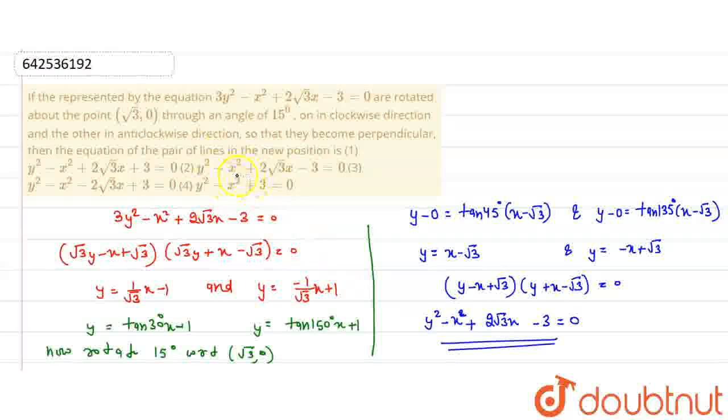So which one is satisfying? The option is C, option is second: y² - x² + 2√3x - 3.